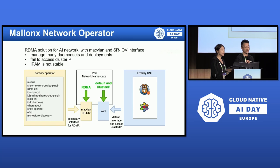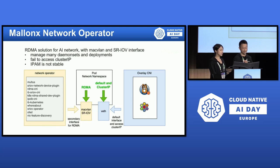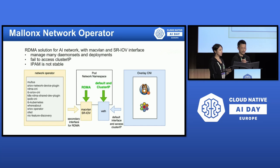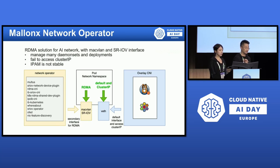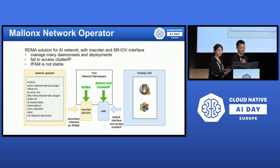A typical open source project, the network operator provided by NVIDIA, is a good implementation of virtual network interfaces like MacVLAN, SR-IOV, and IPVLAN. However, in reality, some requirements are still not met. We may have to use dual CNI — for example, using Calico and the network operator at the same time to meet various network needs. Additionally, the administrator has to manage many daemon sets and deployments, and MacVLAN interfaces cannot access ClusterIP. Finally, IPAM is not stable enough for production usage.